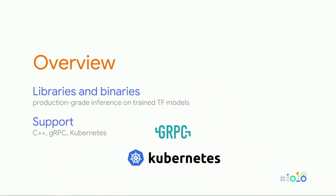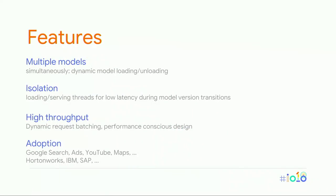TensorFlow Serving is the libraries and binaries you need to do production-grade inference over trained TensorFlow models. It's written in C++ and supports gRPC, and plays nicely with Kubernetes. It supports multiple models on one TensorFlow model server — just as you wouldn't push a new binary right to production, you don't want to push a new model straight to production either. You can serve one model on production traffic, load a new one, send it canary or QA requests, make sure everything's fine, and then move traffic over. It also supports transparent reloading of new models.